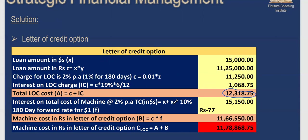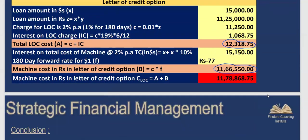Converting $15,150 at the six-month forward rate of ₹77 gives a rupee payment of ₹11,66,550 for the machinery. Adding the letter of credit cost component, the total cost under the letter of credit option comes to approximately ₹11,78,868.75.